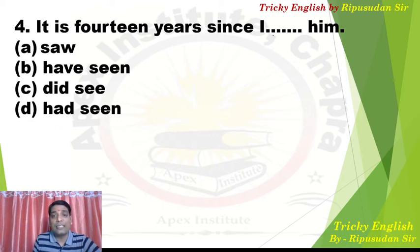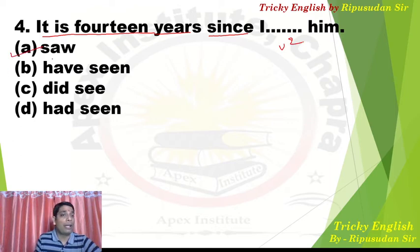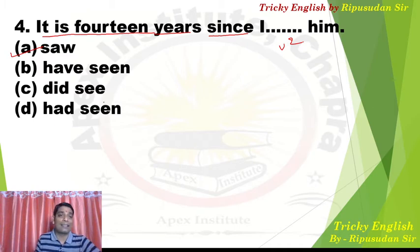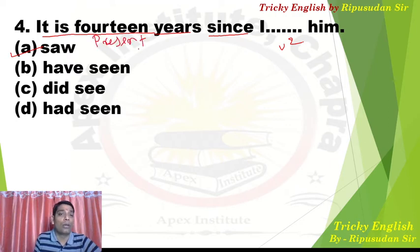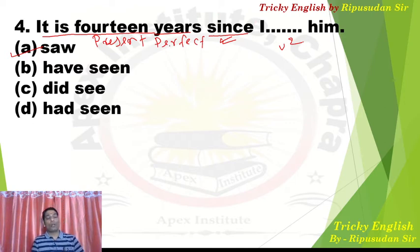Now we fill the tense after 'since'. Remember the structure: if the pattern 'it is + time' is given before 'since', then afterwards we always use V2. Option A has 'saw', B has 'have seen', C has 'did see', and D has 'had seen'. Whenever you see the structure 'it is + time', or if an action has happened and is in present perfect, and 'since' is working as a conjunction of time, then we use V2 after it. It has been 14 years since I met him.